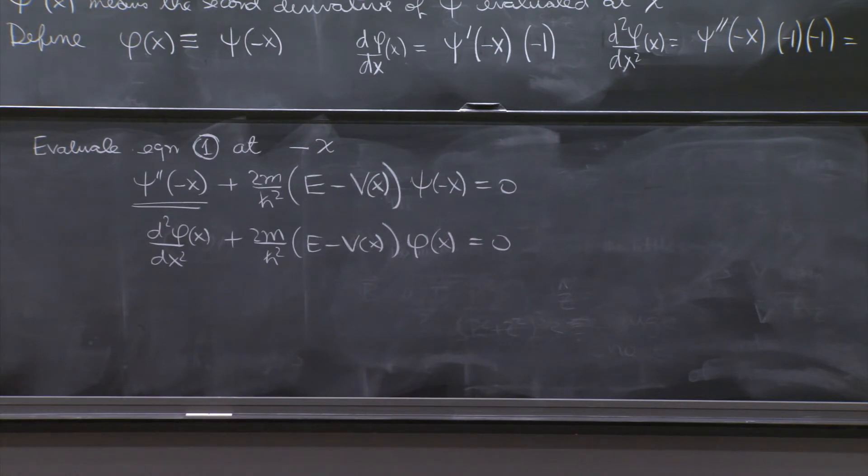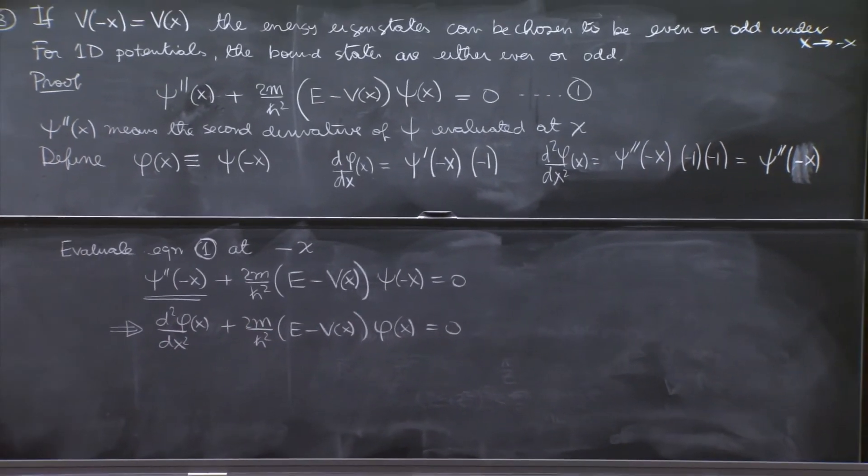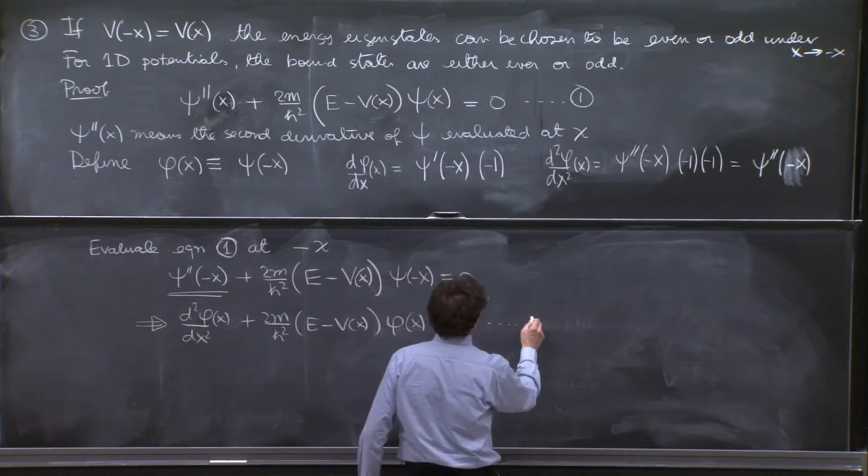And then you'll realize that this thing is just φ''(x) + (2m/ℏ²)(E - V(x))φ(x) = 0. So actually, you've proven that φ, defined this way, solves the same Schrödinger equation with the same energy. So if 1 is true, this thing, I guess we can call it 3, is 1, 2.